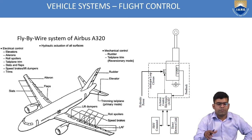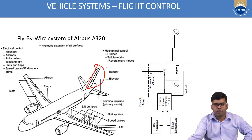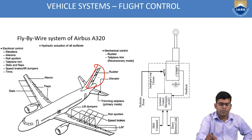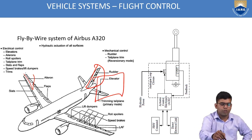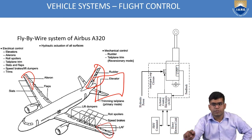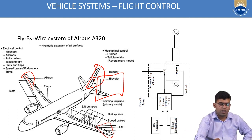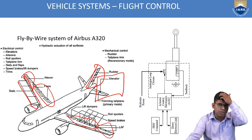The diagram shows all control surfaces existing on an aircraft today. Yaw is controlled by the rudder on the vertical tail plane. The elevator controls the pitching moment. Ailerons control the roll moment. These are primary control surfaces. Secondary control surfaces include slats, flaps, lift dumpers, and roll spoilers — roll spoilers being essentially the speed brakes.